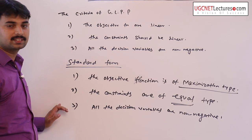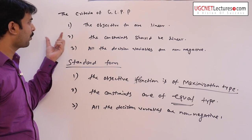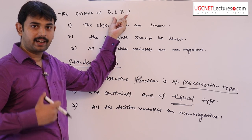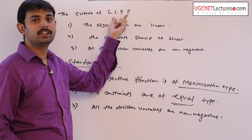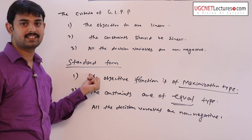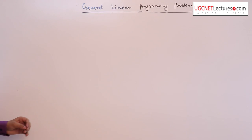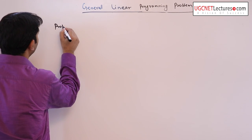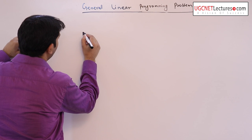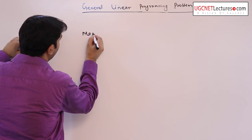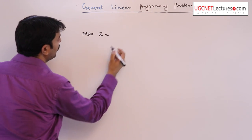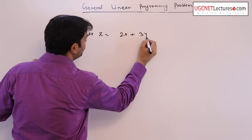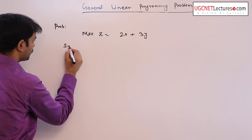Now I will discuss: if the problem is a general linear programming problem, how it reduces to its standard form. So, if the problem is maximization of z equal to 3y subject to the constraints...